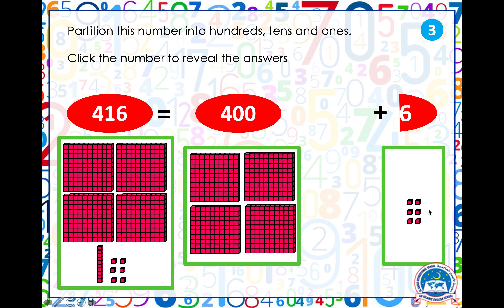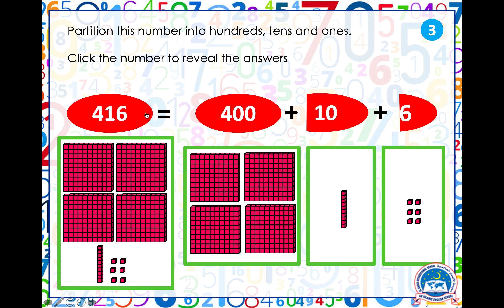Let's try this one. What is the missing number? Here we have the number 416. We've broken it up into 400, which means four groups of 100, and six ones. So how many tens are in this number? If you've guessed that there is one ten, which makes just 10 in this number — you are correct. Well done!